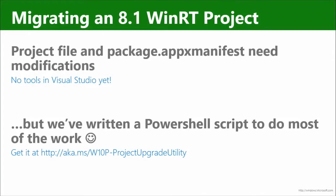What we're going to do is take a single-headed Windows 8.1 app and move it over to UAP. If you're hoping to go into Visual Studio and right-click and say 'upgrade to UAP,' at the moment with the state the tools are in this tech preview, you won't find that yet. But we've actually written a PowerShell script that does a lot of the work — change this attribute, remove this element, replace it with this — because a lot of it is very repetitive. We have an upgrade-to-UAP utility you can download at aka.ms/w10p-project-upgrade-utility.